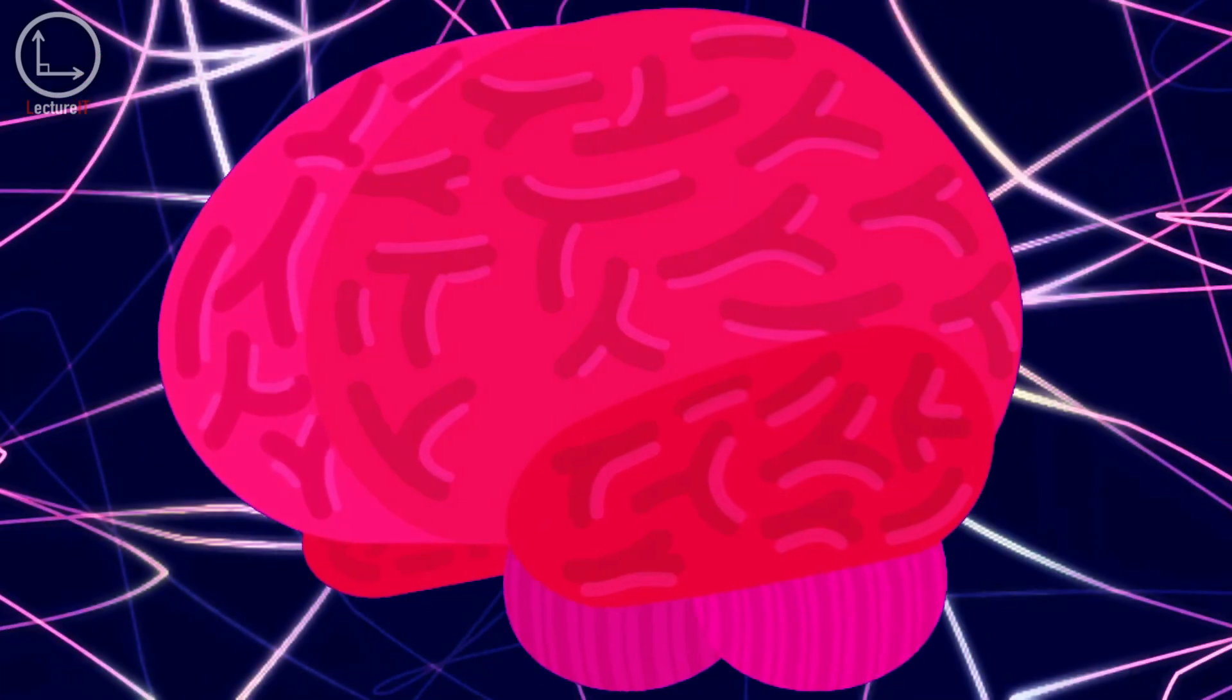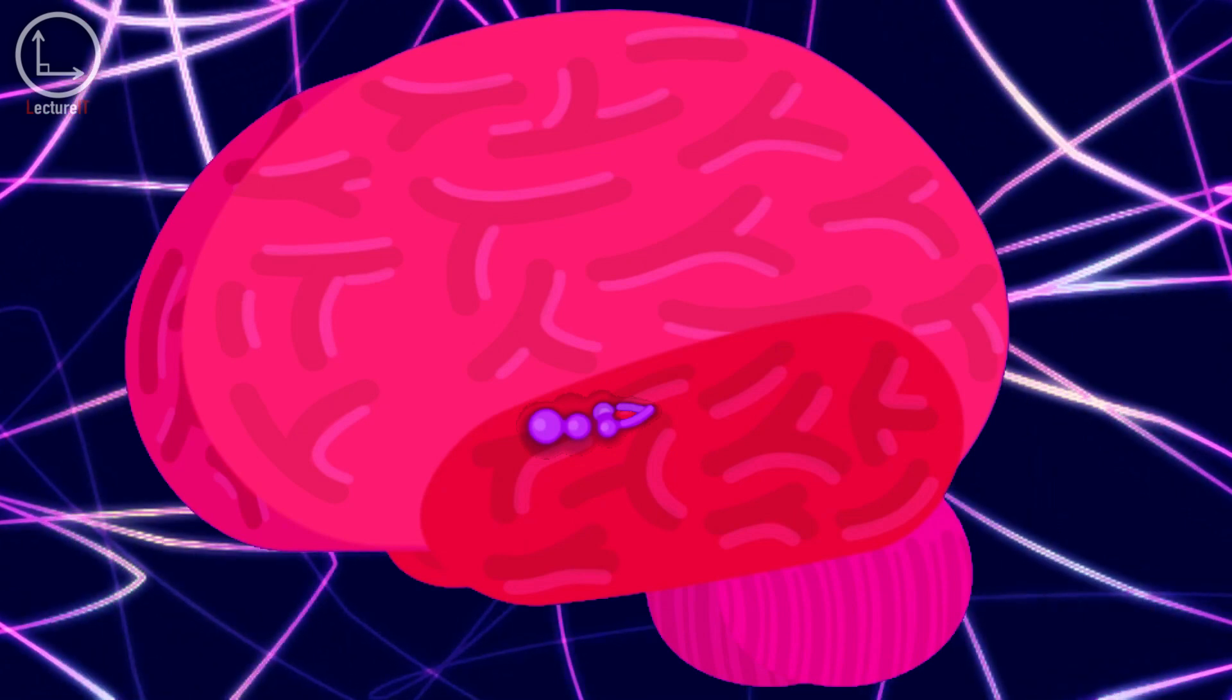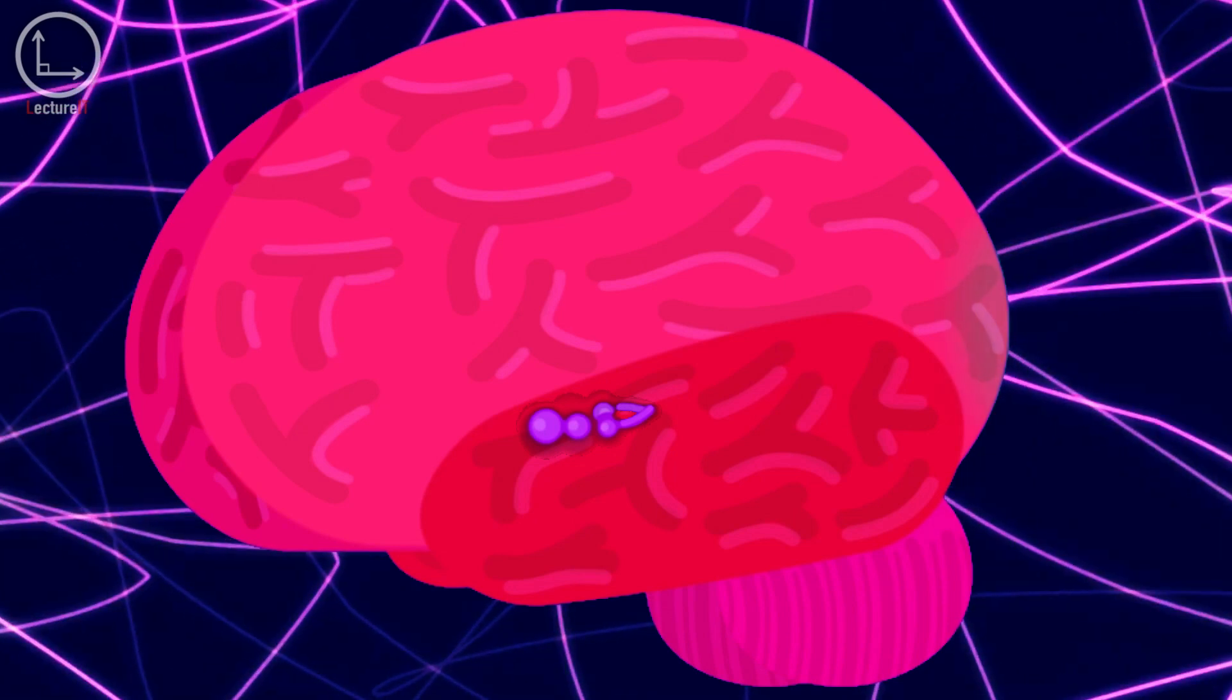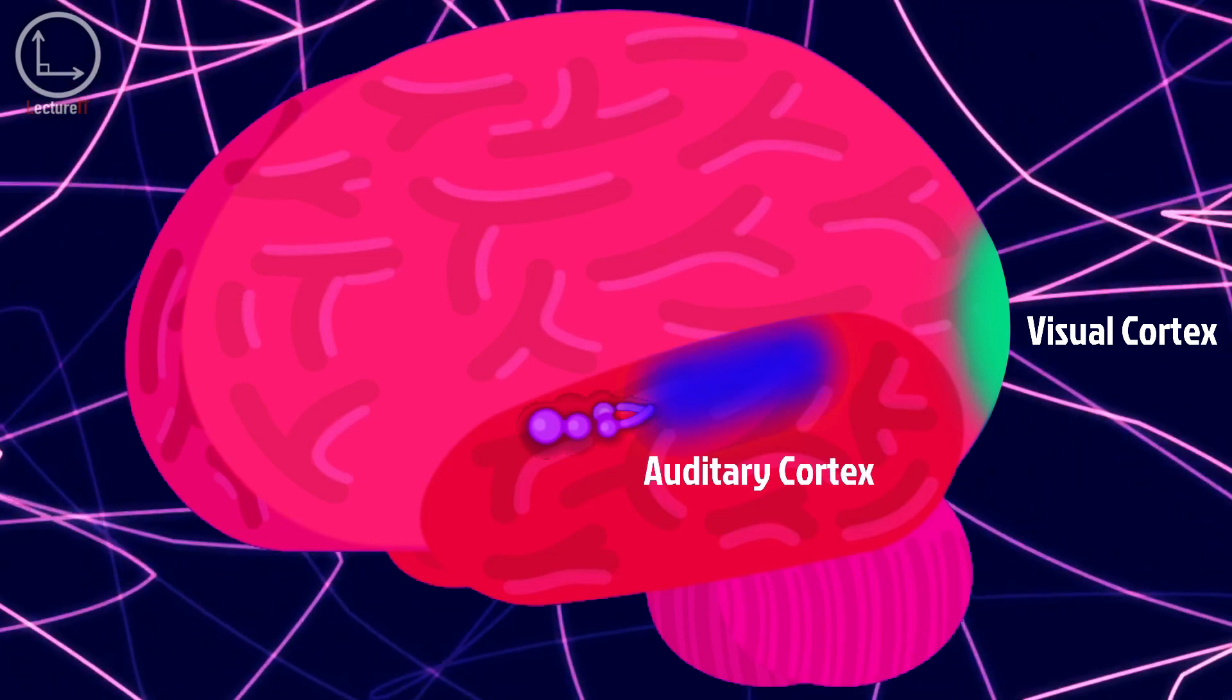The hippocampus serves as a temporary hub, providing the initial framework for a memory that interacts with specific cortical regions, like visual cortex for sights and auditory cortex for sounds, to strengthen connections between relevant neurons.